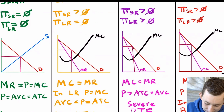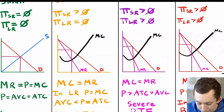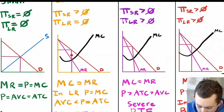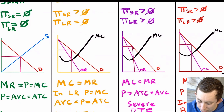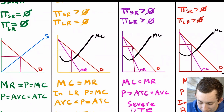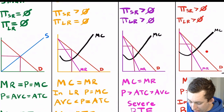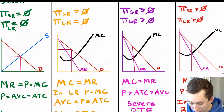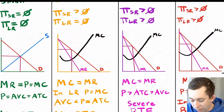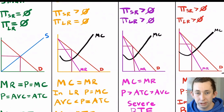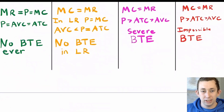In terms of profit in the short and long run: in perfect competition you're never making a profit in either run. In monopolistic competition maybe you make a profit in the short run but not in the long run. In oligopoly, duopoly, and monopoly markets you're making positive profit in both the short and long run. Looking at the graphs, in oligopoly, duopoly, and monopoly we set marginal cost equal to marginal revenue and go up to the demand curve to find the price.